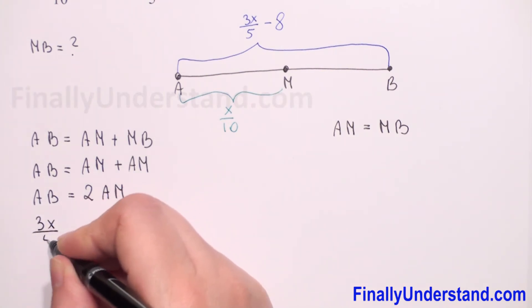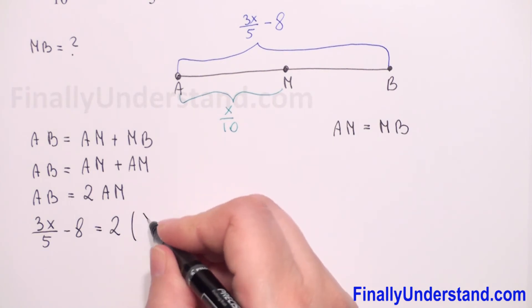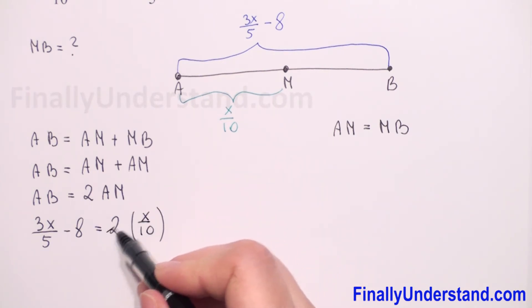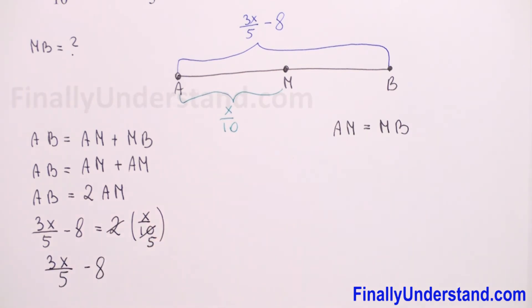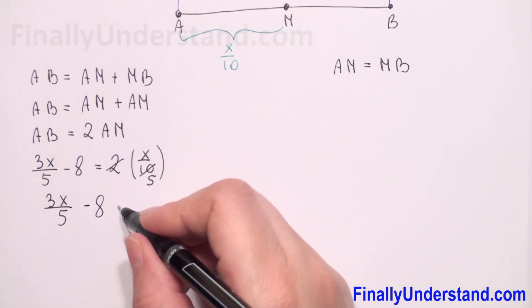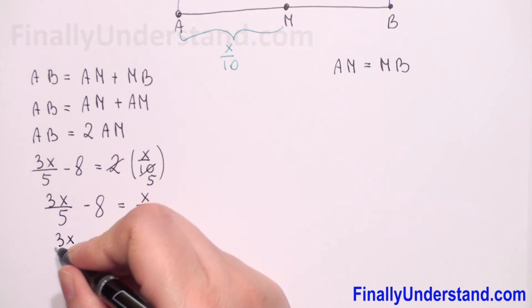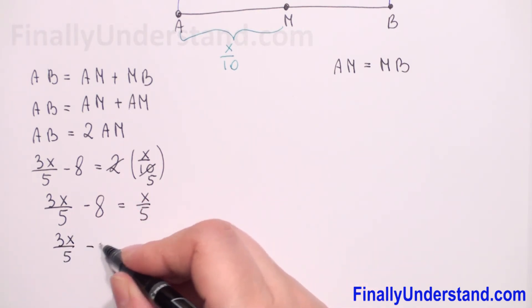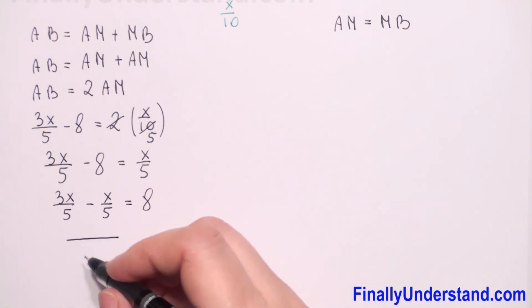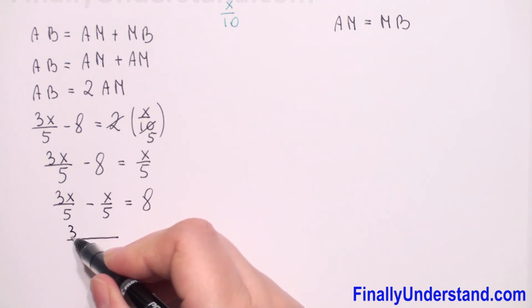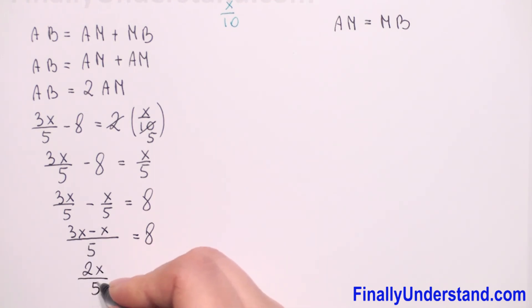So we have 3x over 5 minus 8 is equal to 2 times AM, which is x over 10. Simplifying, 2 times x over 10 equals x over 5. Moving the x terms to the left side and the constant to the right side, we get 3x over 5 minus x over 5 equals 8. Since we have the same denominator, we combine numerators: 3x minus x equals 8, giving us 2x over 5 equals 8.